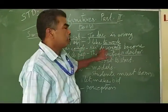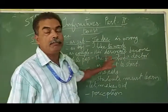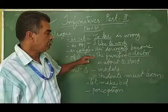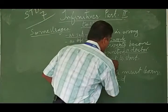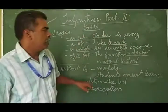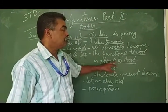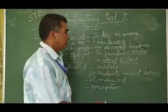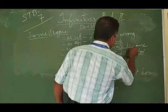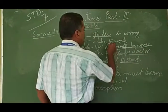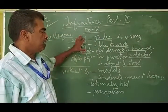Then also as an object to a preposition. The function is about to start. About is a preposition here, and object to that is to start. So this is an infinitive. Here, to become is an infinitive, to work is an infinitive, to lie is an infinitive.